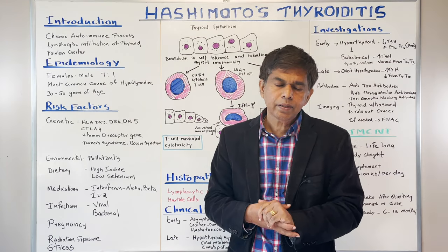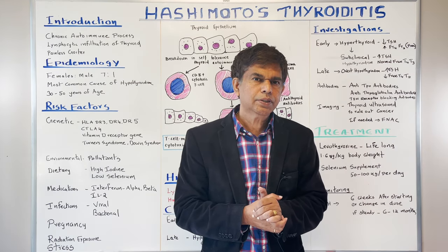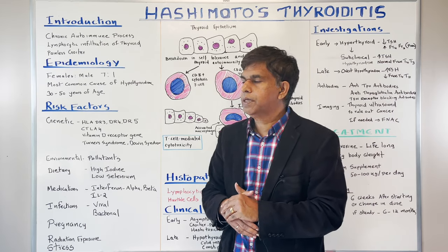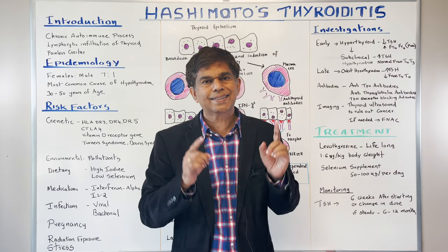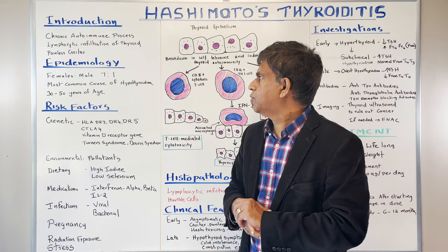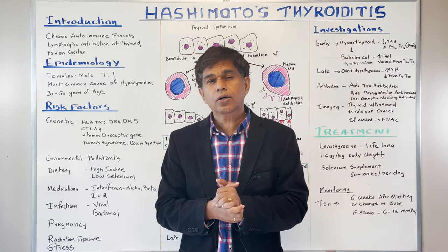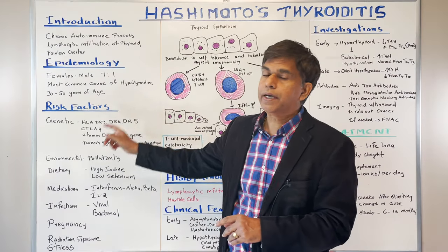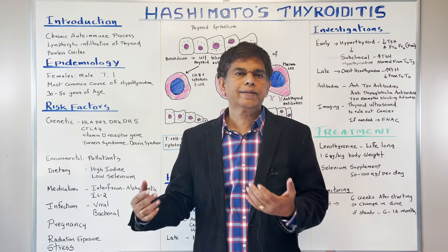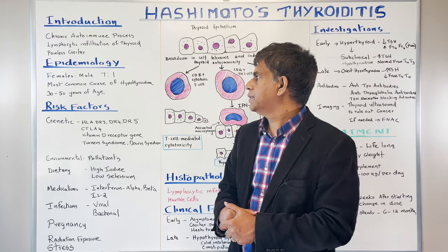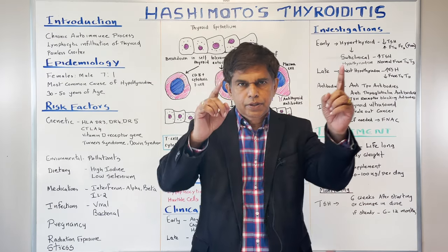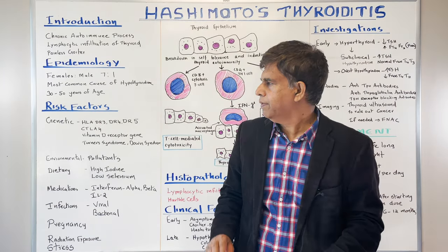Looking at the epidemiology: females are very commonly affected, with a female-to-male ratio of about 7 to 1. It is the most common cause of hypothyroidism in the United States, and the typical age of onset is 30 to 50 years of age.